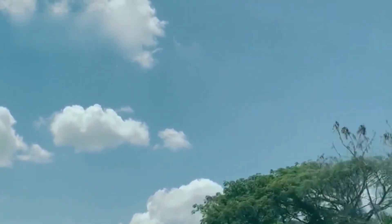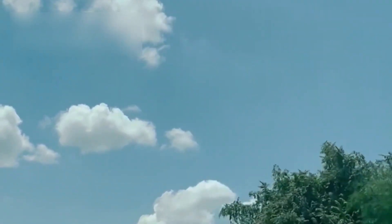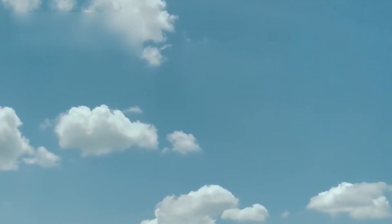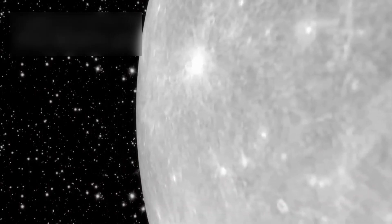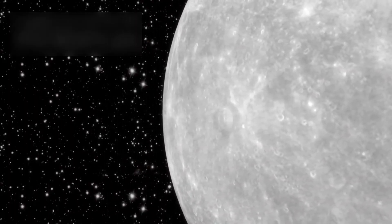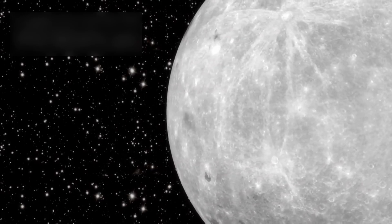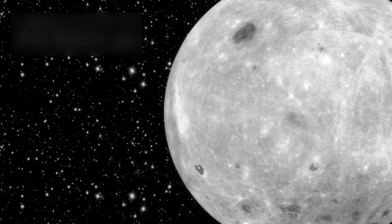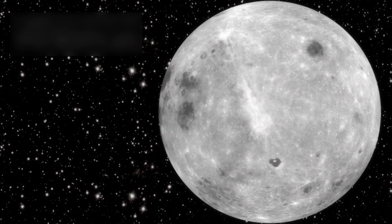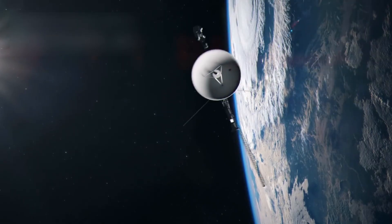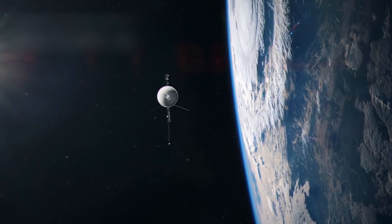To grasp these mind-bending scales, let's start small. At a steady speed of 70 miles per hour, you could circle the Earth's equator in about 15 days. At that speed, it would take you five months to reach the Moon, 63 years to reach Mars at its closest, and over 4,400 years to get to Neptune.